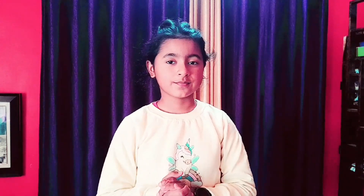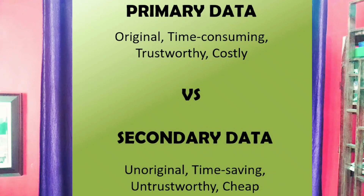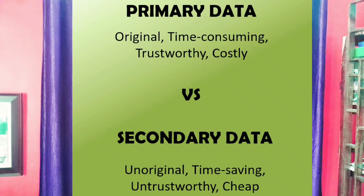Let's understand the differences between primary data and secondary data. Primary data is original; secondary data is not original. Primary data collection has a very high cost, but secondary data is cheaper. Primary data is trustworthy, but secondary data not so much. Primary data is time-consuming, but secondary data saves time and effort.